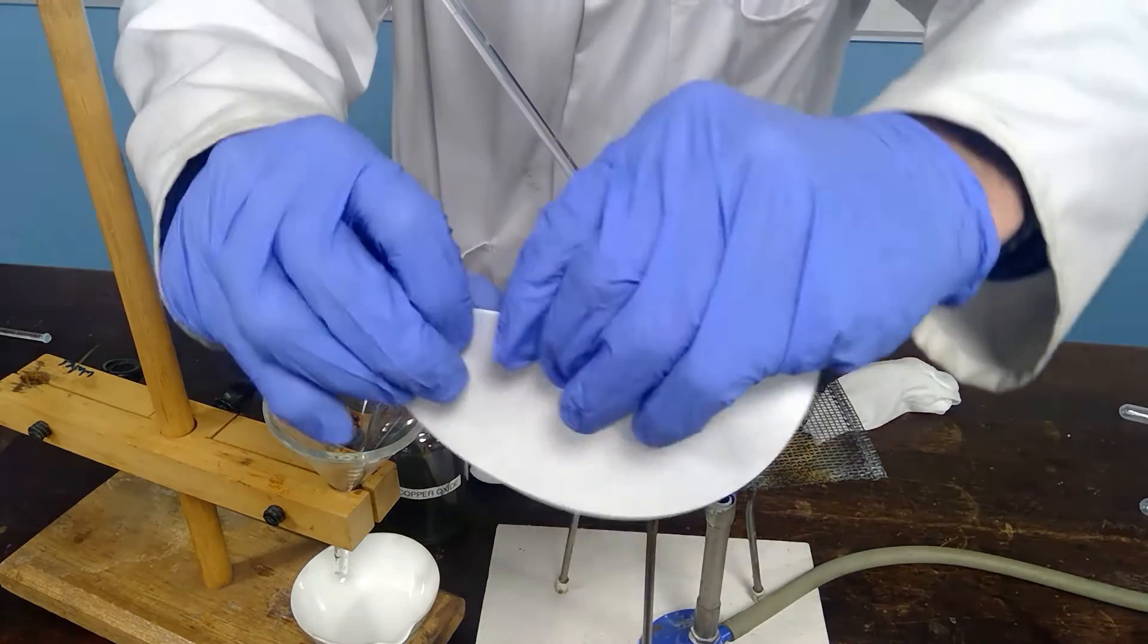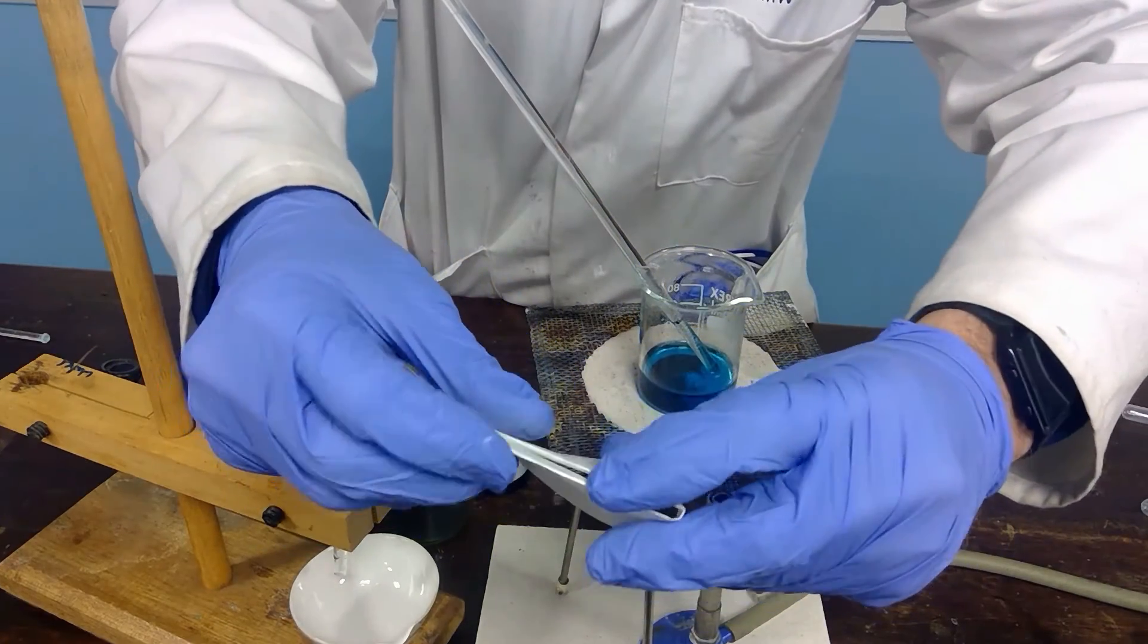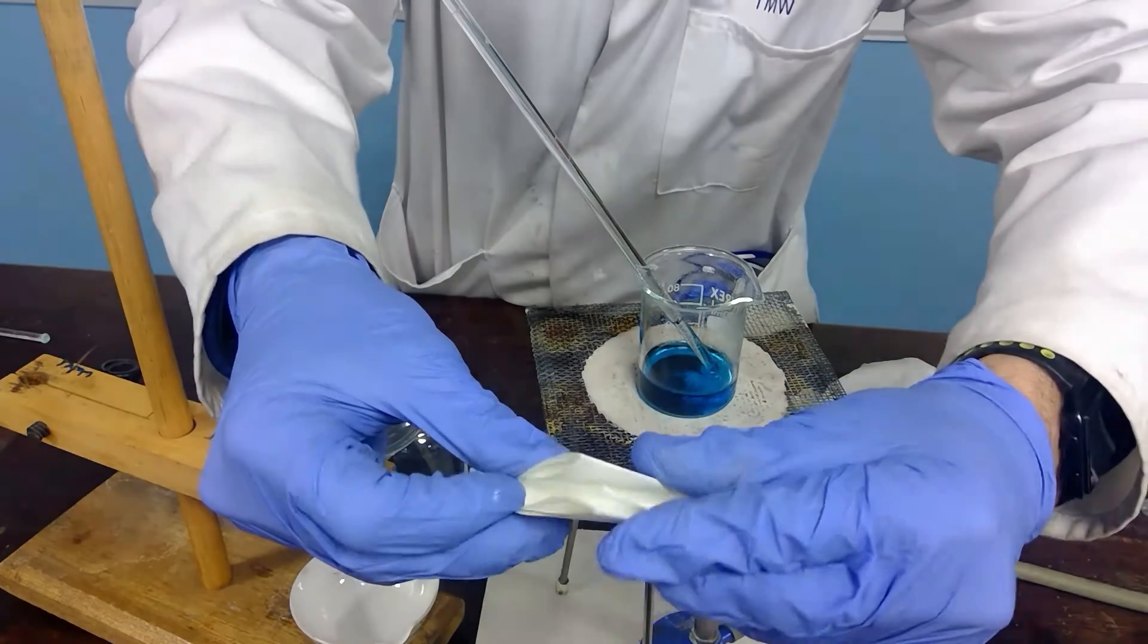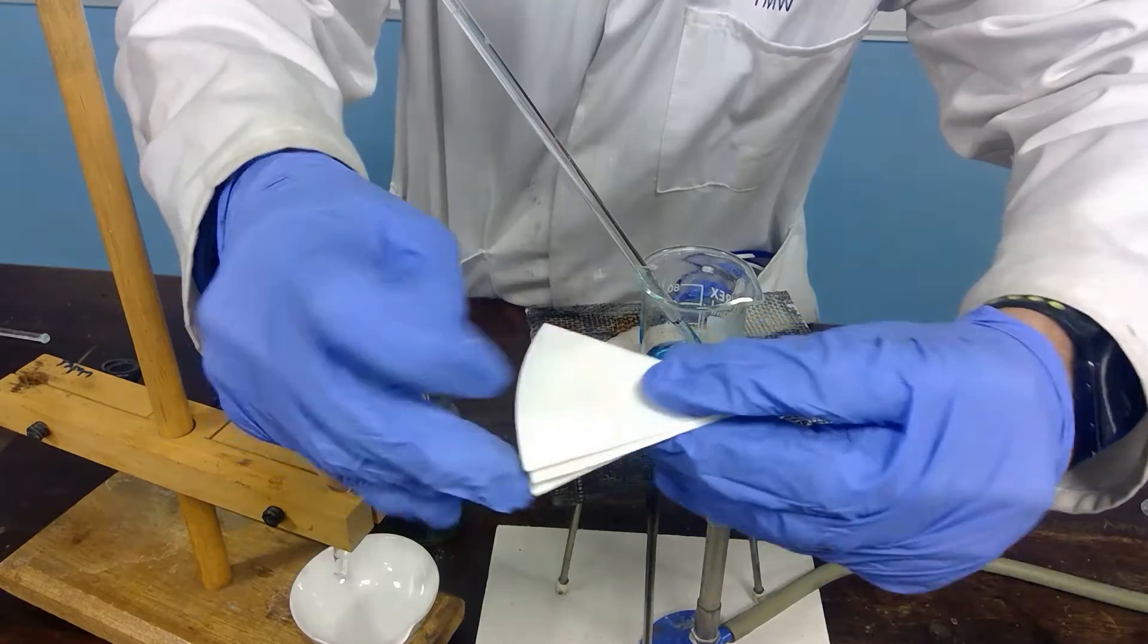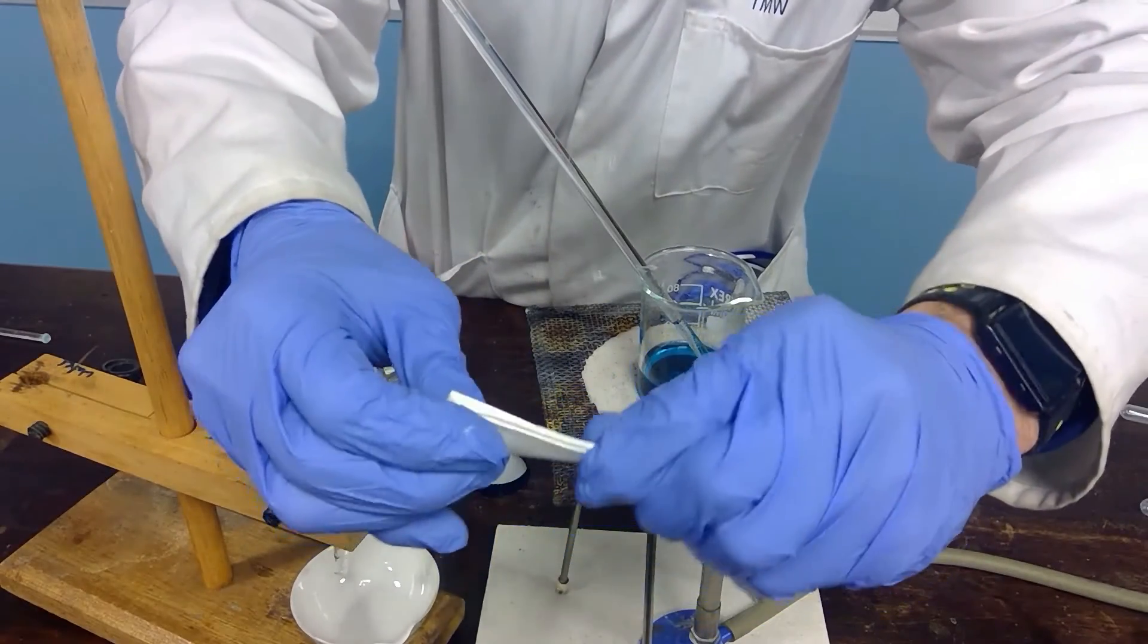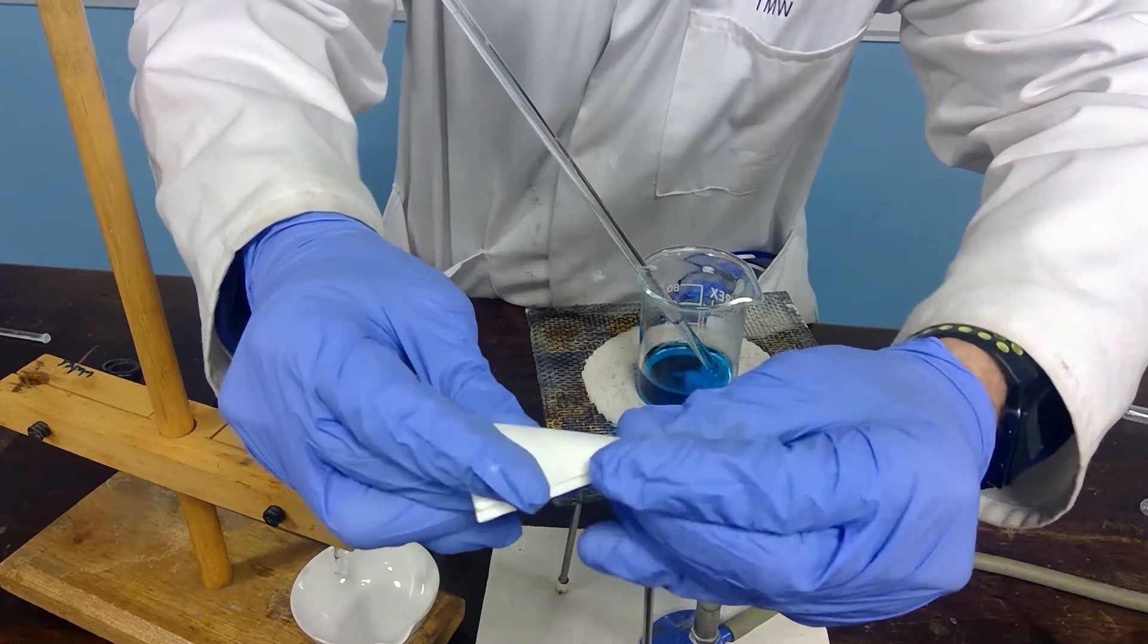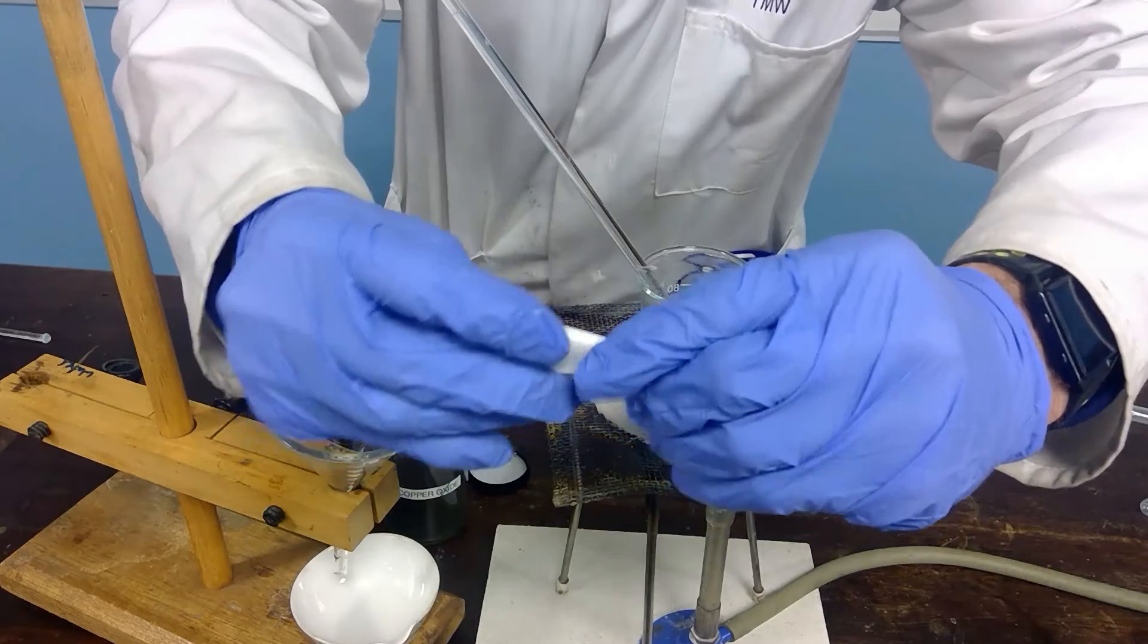To make fluted filter paper you fold once, twice, three times and a fourth time. On the fourth fold you make sure that the folds can move in either direction by turning it back on itself and refolding it in the opposite direction.